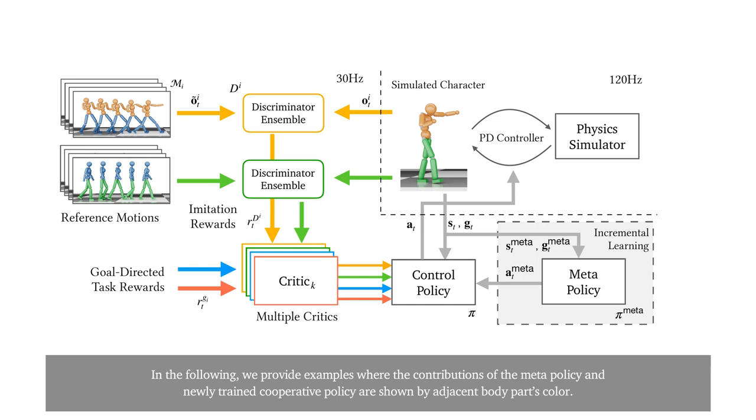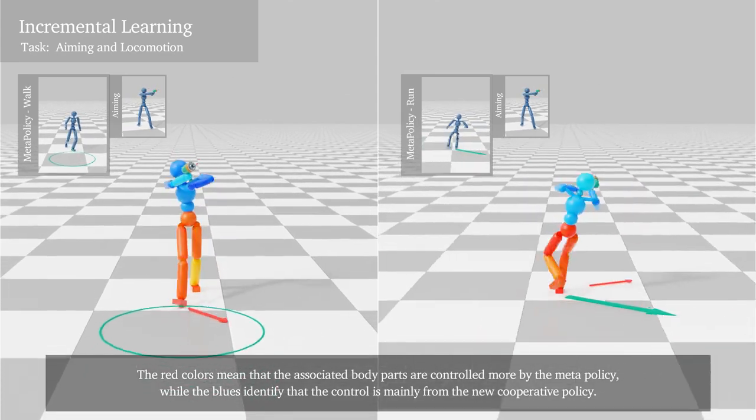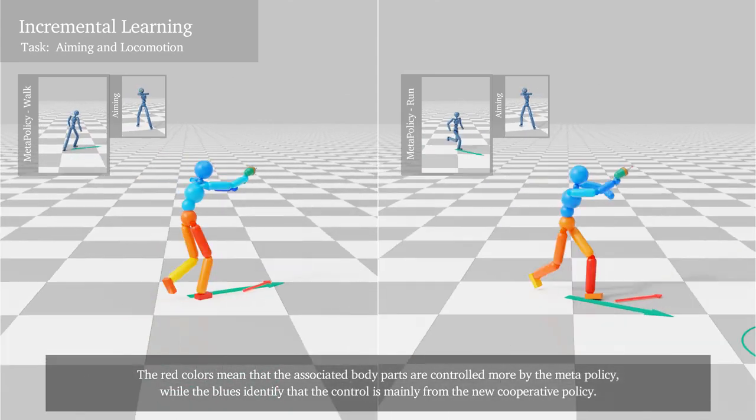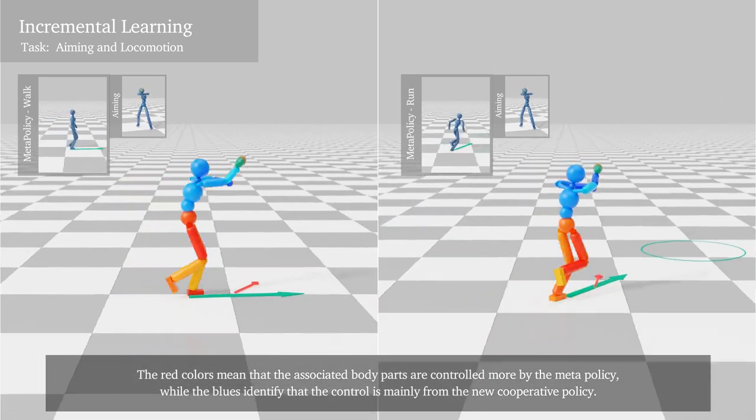In the following, we provide examples where the weighted contributions of the meta-policy and newly trained cooperative policy are shown by adjacent body parts color. The red colors mean that the associated body parts are controlled more by the meta-policy, while the blues identify that the control is mainly from the new cooperative policy.